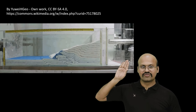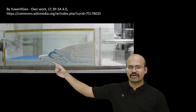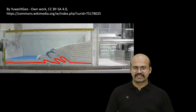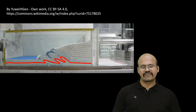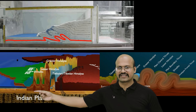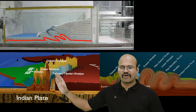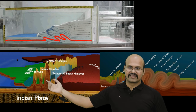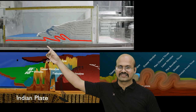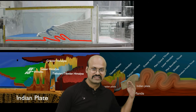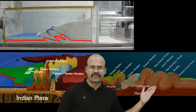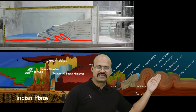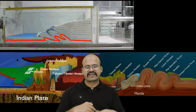When we continue to move the plunger further, a third folding forms, and now there are three folds each lying over each other. This shows us that the Shivaliks, Lesser Himalayas, and Greater Himalayas, which we previously showed in a vertical structure, are not accurately represented that way. Actually, fold mountains form like this — they lie over each other. So the Lesser Himalayas lie over the Shivaliks, and the Greater Himalayas lie over the Lesser Himalayas — all stacked upon each other.